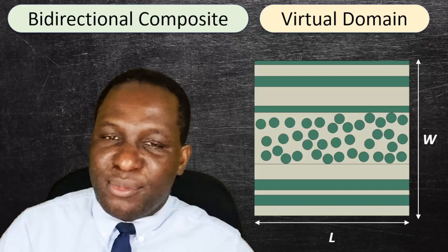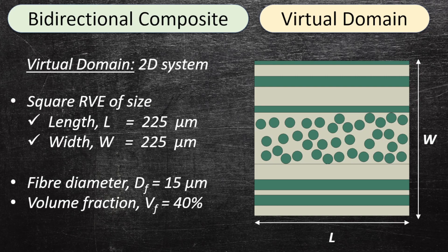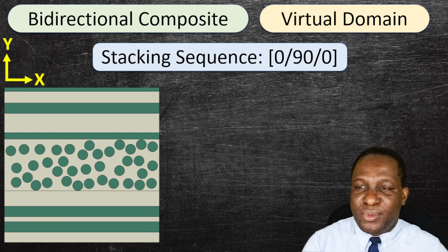The actual domain I'm going to use looks like this. We're going to look at a length and width of about 225 microns. The fiber diameter will be 15 microns and a volume fraction of 40%. The stacking sequence for this system will be a 0/90/0 degree stacking sequence.